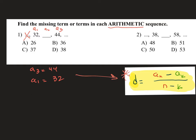I can find that common difference. So the common difference is going to be 44 minus 32 divided by the positions, which are 3 and 1. So this is going to be 12 over 2, which is 6. So my common difference is 6.